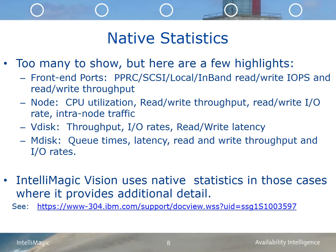At the node level, we can see the CPU utilization, the read-and-write throughput, the read-and-write IO rate, and the intranode traffic and latency. At the VDISK level, we're able to see the read-and-write throughput, IO rate, read-and-write latencies, as well as cache hits. We can also see at the VDISK level PPRC tracks sent and received. At the MDISK level, we can see queue time, latency, read-and-write throughput, and IO rates. For a very detailed look at what statistics are available, please reference the IBM URL in this document. IntelliMagic Vision does rely on these native statistics to provide the detailed analysis.